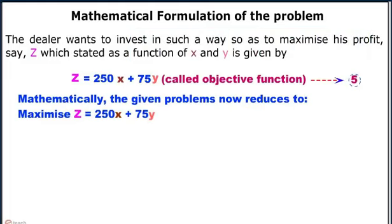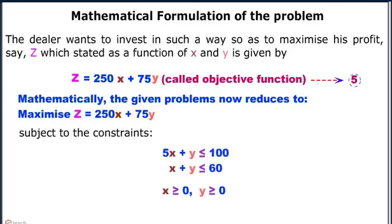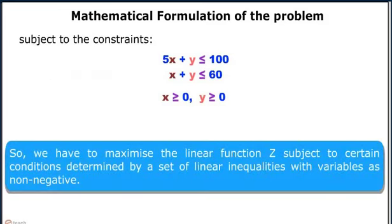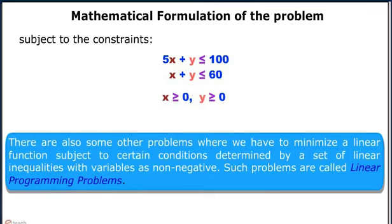Mathematically, the given problem reduces to: maximize z = 250x + 75y, subject to the constraints 5x + y ≤ 100, x + y ≤ 60, x ≥ 0, and y ≥ 0. We have to maximize the linear function z subject to conditions determined by a set of linear inequalities with variables as non-negative. There are also problems where we minimize a linear function subject to such conditions.